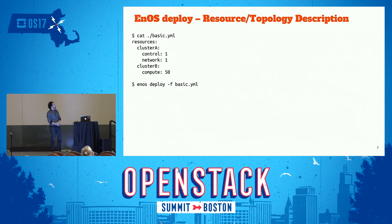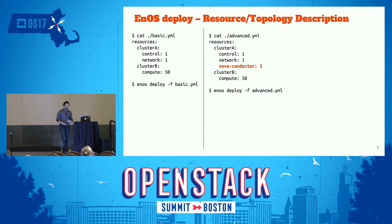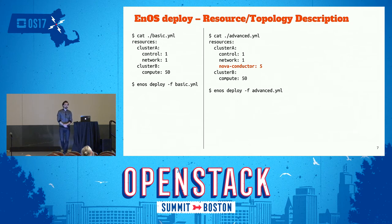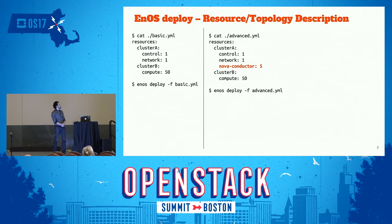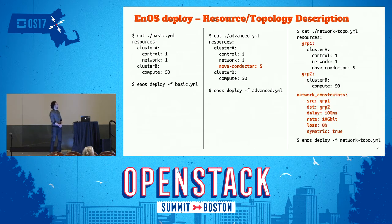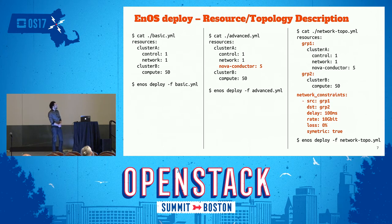In the massively distributed working group, we want to try more advanced configurations — isolating some services and doing replication. In ENOS, this is really easy. You just give the name of the services you want to isolate and the number of resources. When you perform an ENOS deploy, you will end up with, for example, five nodes running NovaConductor. We also added what we call network constraints: you can define logical groups and define delay, rate, and packet loss constraints on network communication between those groups.